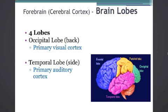The fourth lobe is our temporal lobe, and this is located on the side of the brain. Here is housed the primary auditory cortex. This is the part of our brain that is devoted to processing our sound information. It lets us hear.